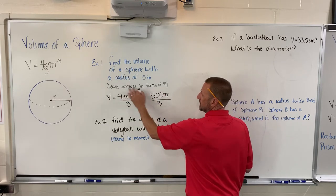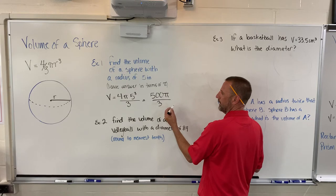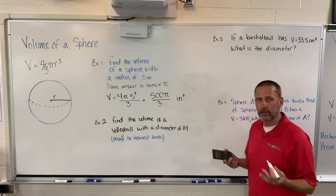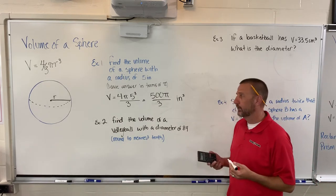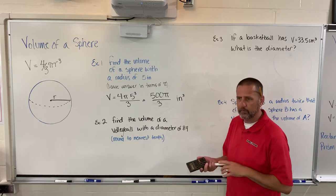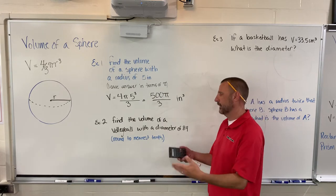If the question says leave in pi, I'm going to leave it in pi and write 500 pi over 3, and then I'll write inches cubed at the end so that I denote that somebody knows this is a measurement of volume. That's why we put these little units at the end, so we let the person know that the calculations we've done represent volume, represent area, or whatever.